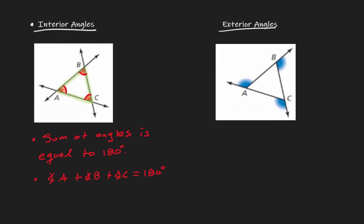It doesn't matter how I redefine my triangle — the summation is still going to be equivalent to 180 degrees. Now let's discuss the second type of angles: the exterior angles. Starting with triangle A, B, C — if I look at the vertices and extend the lines that define this triangle, I create some new angles. Those angles are what we refer to as the exterior angles within a triangle.